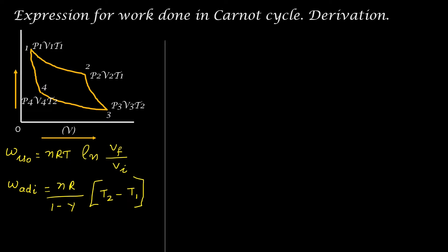So let us consider the work done for each step. Work done from 1 to 2, that is isothermal expansion - we have to use this formula: nRT1 natural log, final volume is V2 and initial volume is V1, so V2 divided by V1.